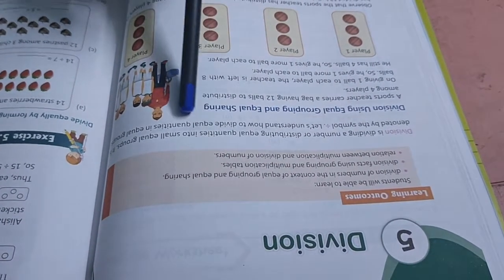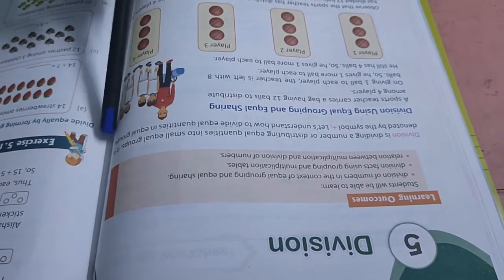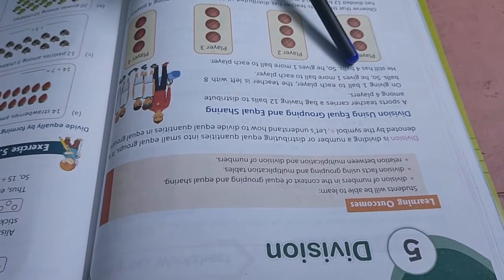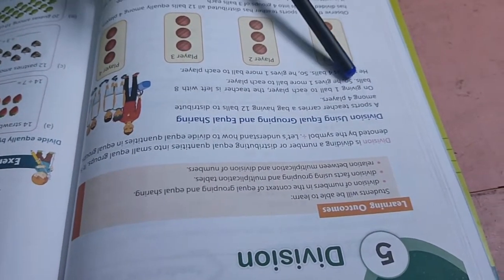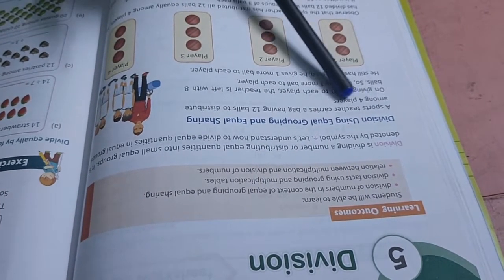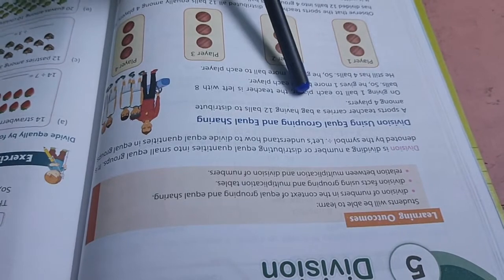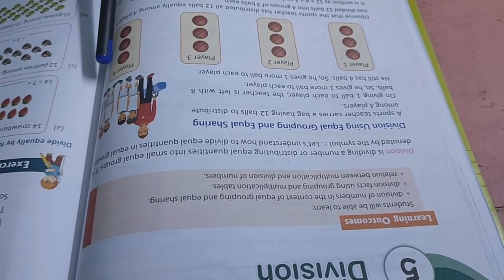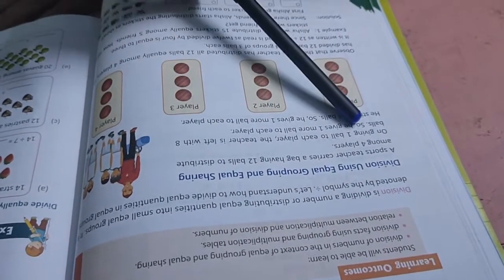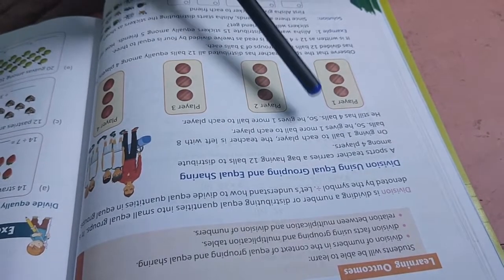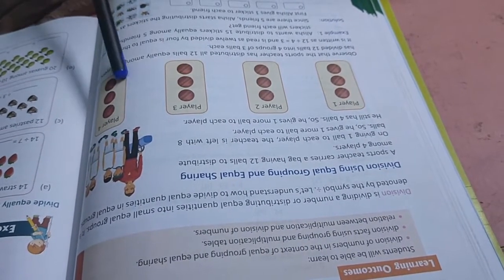Let's understand how to divide equal quantities in equal groups. See, a sports teacher carries a bag of 12 balls to distribute among 4 players. So 1, 2, 3, 4 players. That means 12 divided by 4, that means 3 will come in each group. See, 3 balls are there.